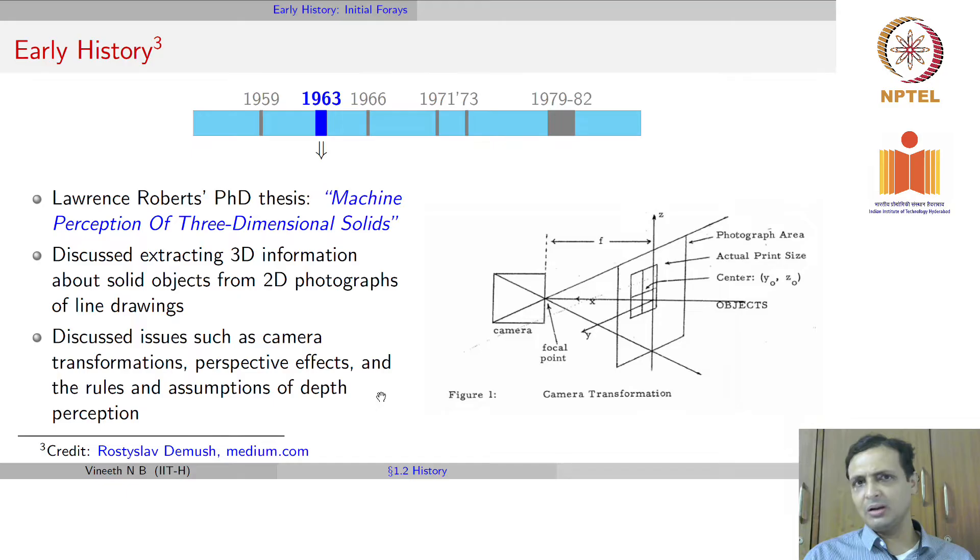Then in 1963, there was a significant development by Lawrence Roberts who wrote a PhD thesis on machine perception of three-dimensional solids. The PhD thesis is hyperlinked on this slide. This thesis had some ideas even beyond its times. The thesis discussed extracting 3D information about solid objects from 2D photographs of line drawings. The aim of computer vision is to understand the 3D world around us from 2D images. This is what was talked about in that PhD thesis in the early 60s. The thesis discussed issues such as camera transformations, perspective effects, rules and assumptions of depth perception.